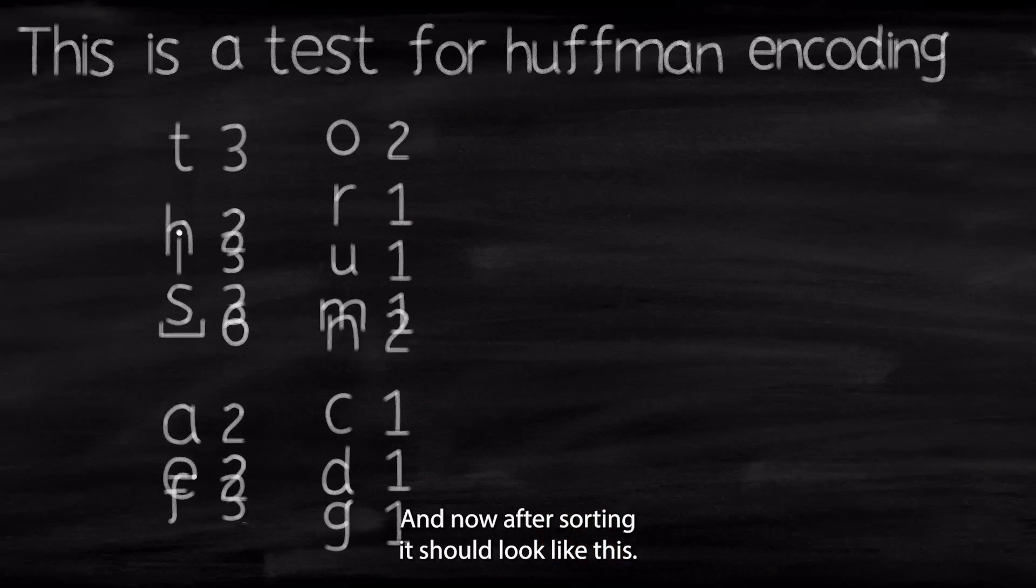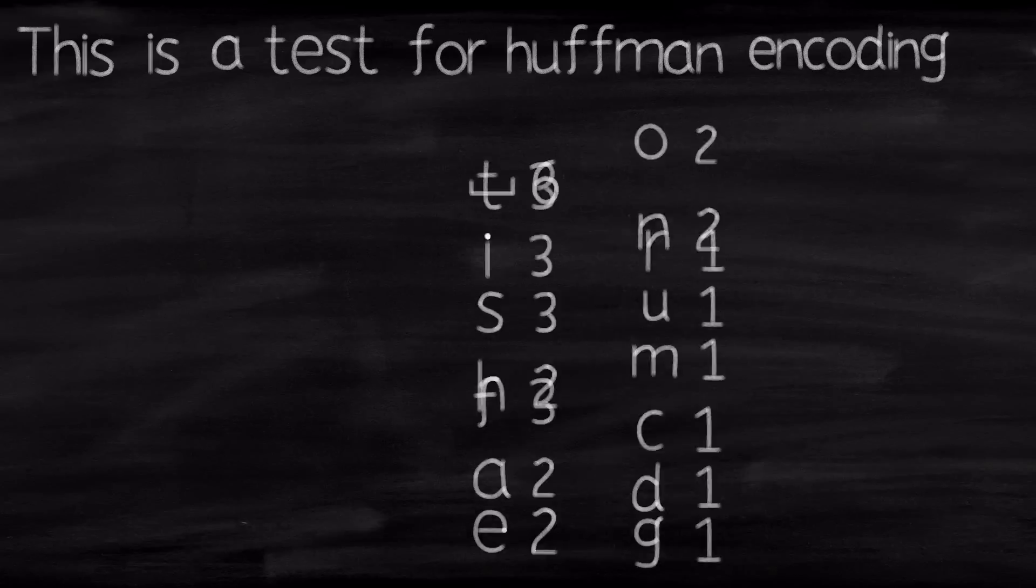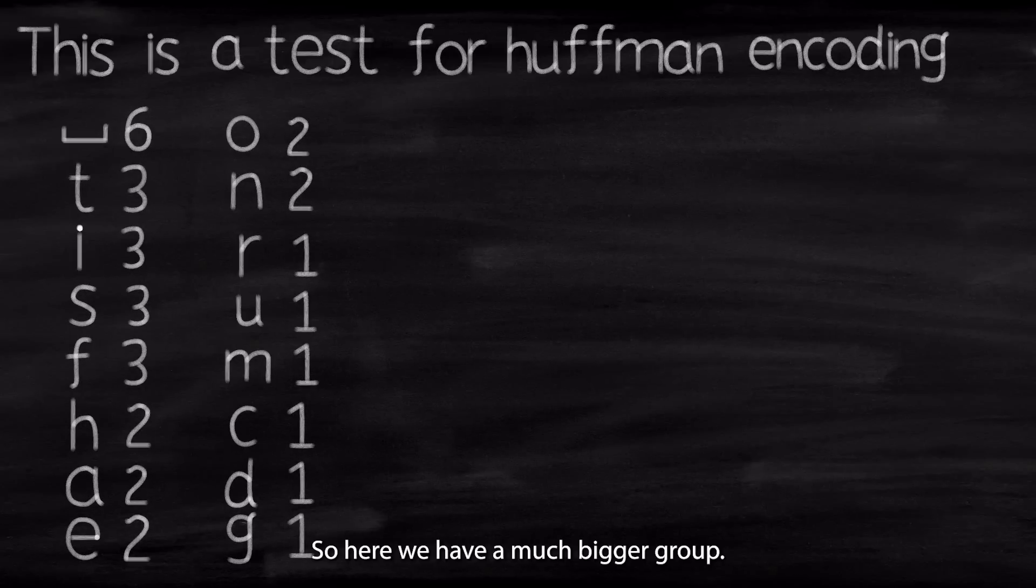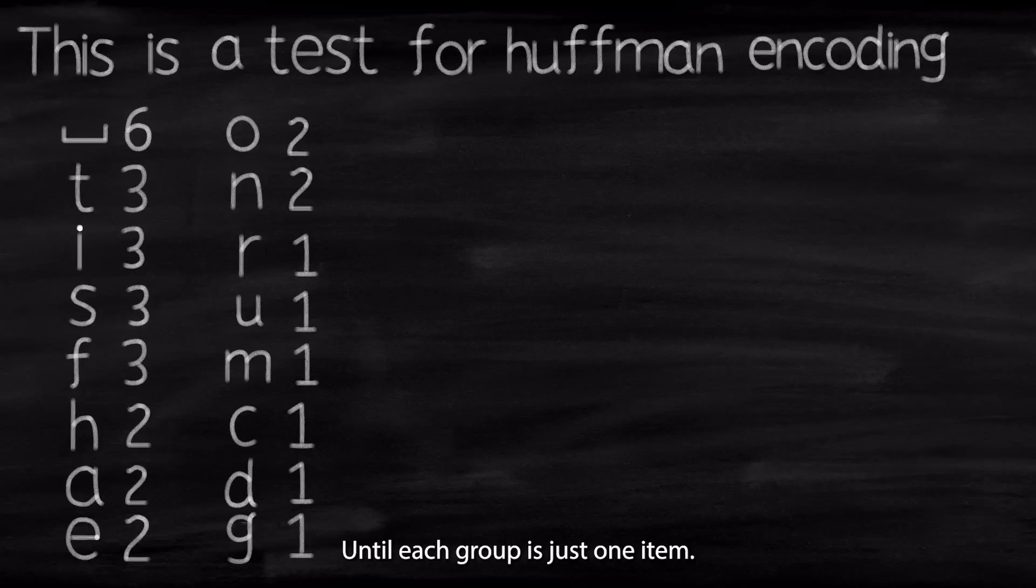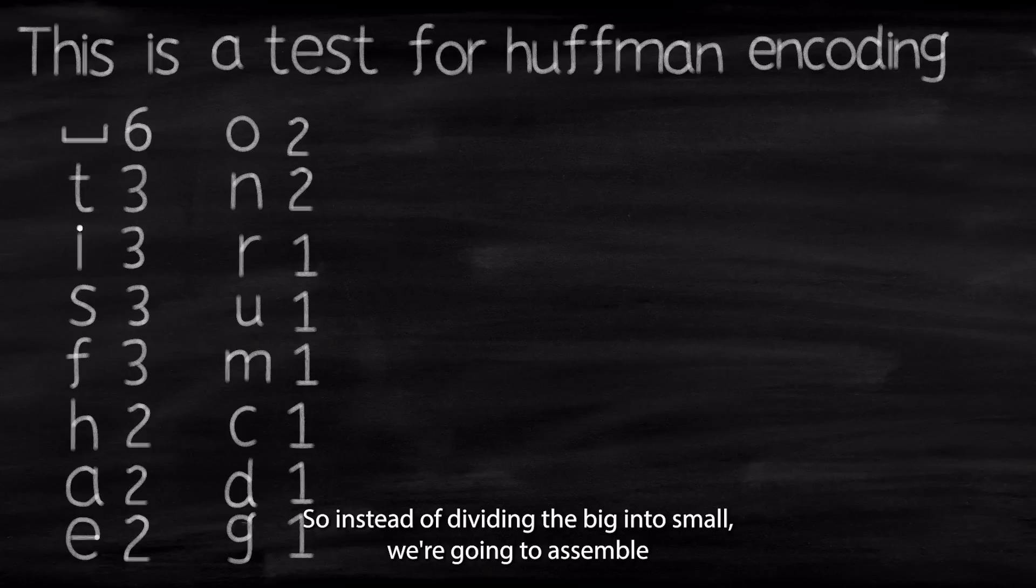And now, after sorting, it should look like this. So here we have a much bigger group. I mean, the usual method we did in the previous example was to divide the big group into two smaller groups. And then each smaller group we divided into even more groups. Until each group is just one item. But here, this time, we're going to do it differently. So instead of dividing the big into small, we're going to assemble the small into big.